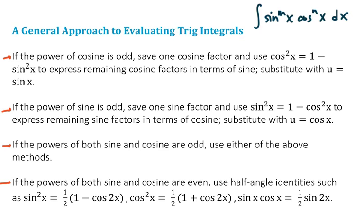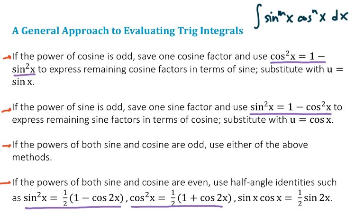Glancing quickly through all these words, you'll notice an identity here: cosine squared of x is equal to 1 minus sine squared of x. That probably sounds somewhat familiar. Another familiar identity is sine squared of x equals 1 minus cosine squared of x — that's just another form of the first identity. We're going to review where these identities come from so that when you need them in the midst of Calc 2, they're more readily available to you.